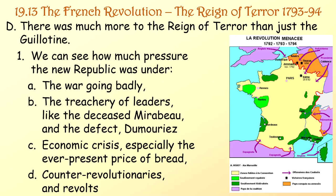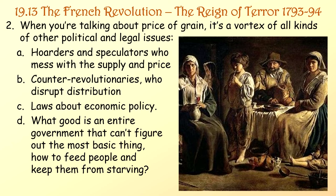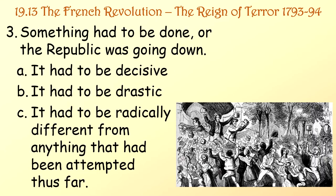We can see how much pressure the new Republic was under: the war was going badly, treachery of leaders like the deceased Mirabeau and the defection of Dumouriez, economic crisis especially the ever-present price of bread, and counter-revolutionaries and revolts. The price of grain was a vortex of political and legal issues — hoarders and speculators, counter-revolutionaries disrupting distribution, and laws about economic policy. Something had to be done or the Republic was going down, and that something had to be decisive, drastic, and radically different from anything attempted thus far.